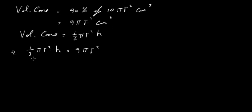So you can see here that everything on the left is multiplied. Everything on the right is multiplied. So we can divide by pi to give us one on each side. We can divide by R squared to give us one on each side. So we end up with a third H is equal to 9. Multiply across by 3 to get rid of the third. So that gives you three nines 27 centimeters.